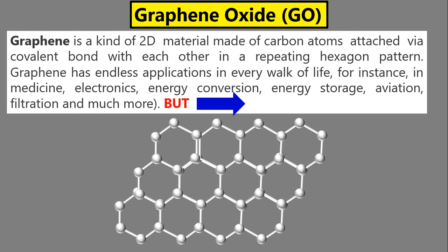Now, if we already know about graphene, why do we need graphene oxide? Graphene is a two-dimensional material made of carbon atoms attached by covalent bonds in a repeating hexagonal pattern. It has applications in medicine, electronics, energy conversion devices, energy storage, aviation, and filtration. The problem is cost. When we attach a functional group to graphene — meaning we oxidize it, chemically reacting graphene with oxygen — we get graphene oxide.